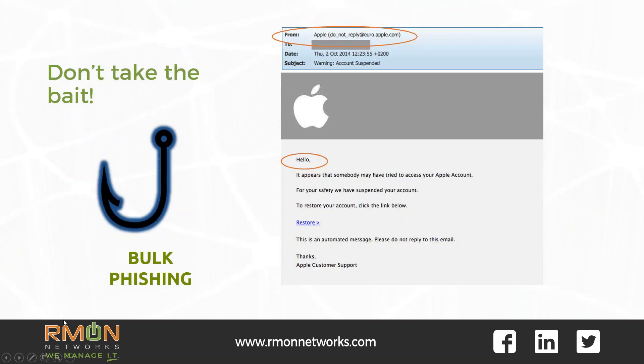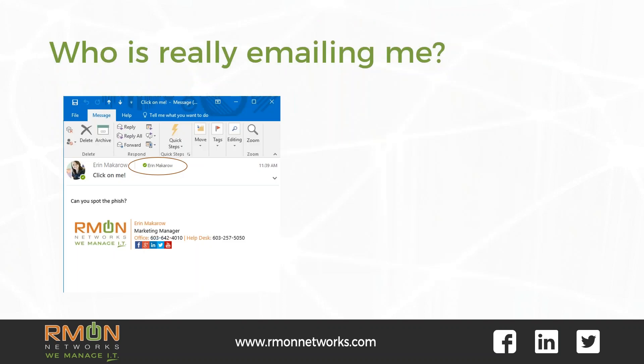Step three: check for poor English or grammar — poor grammar is a telltale sign of a phishing email. Step four: hover over any links within the email to see where they are actually sending you. And when in doubt, never click on an email link; go straight to the emailer's website.